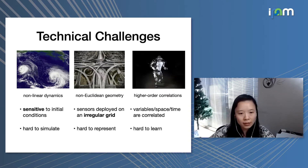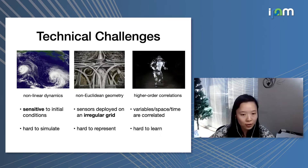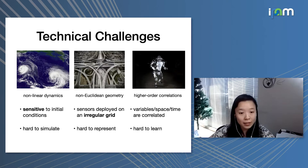Thirdly, spatial temporal data contains strong dependencies, not only across different features — such as the carbon dioxide measurements over temperature — but also there are strong dependencies across different timestamps and different locations. This jointly contributes to higher-order correlation. We know that higher-order structure often poses challenges to high-dimensional models, and there is a curse of dimensionality, so it's very difficult to learn.